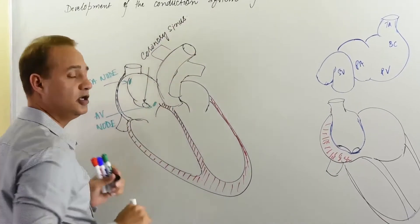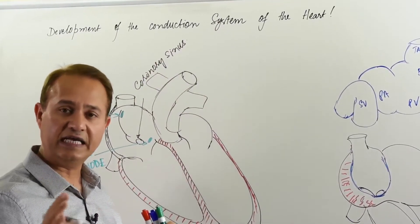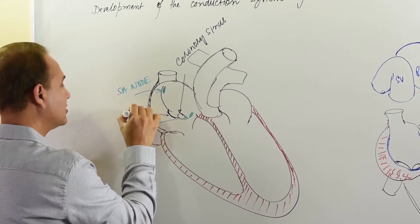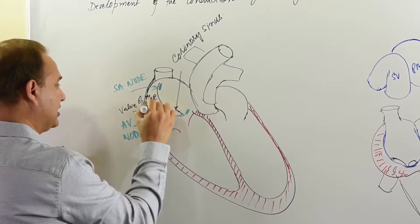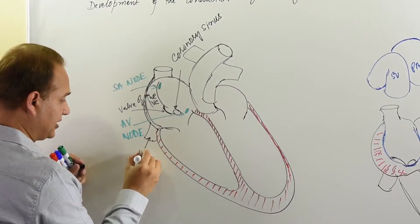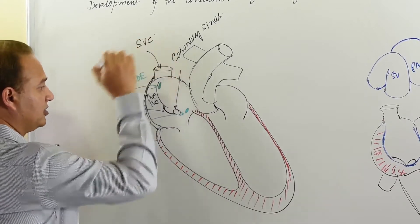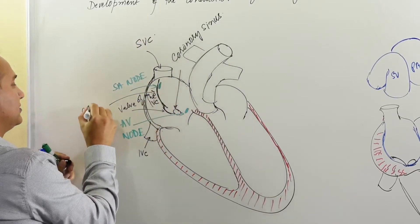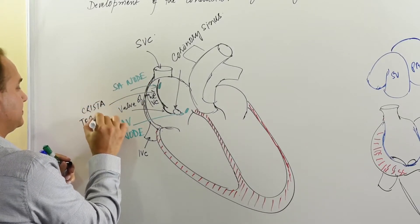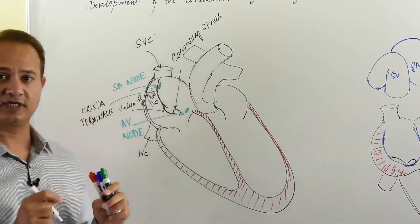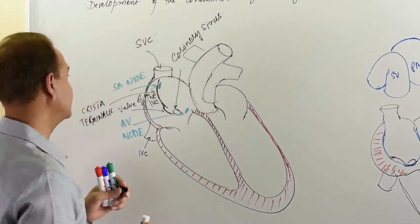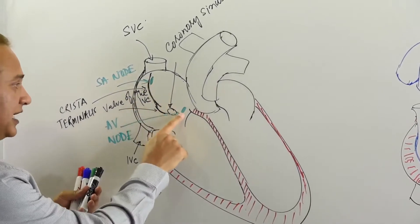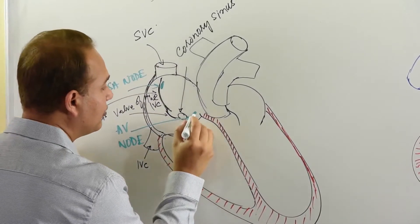Developmentally, the coronary sinus is the atrophied left horn of the sinus venosus. Here is the valve of the inferior vena cava, the inferior vena cava, and the superior vena cava. This line is the crista terminalis. The SA node is present here; the AV node is present here.